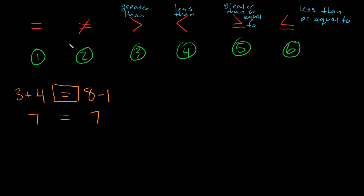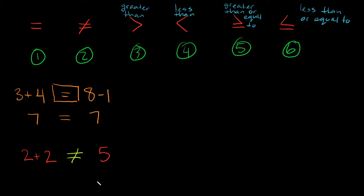Now let's jump to the second one: does not equal. If I wrote down two plus two and five, which symbol could I use? I could use does not equal, because two plus two does not equal five — it equals four. So in this case the does not equal sign would be appropriate.